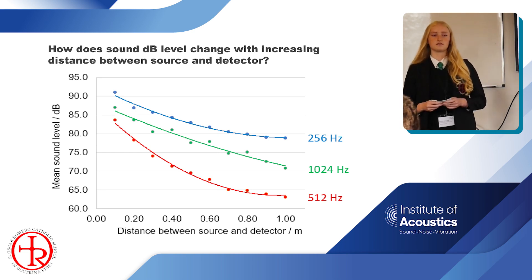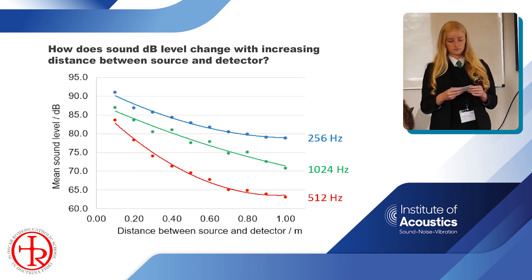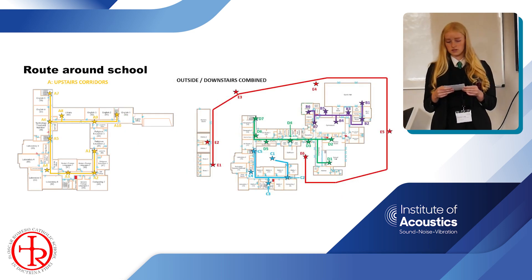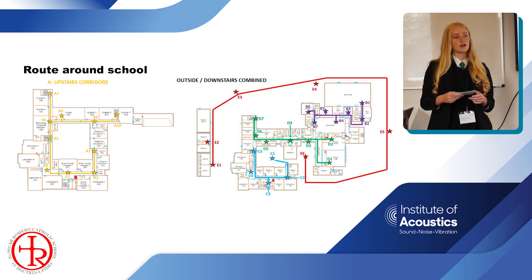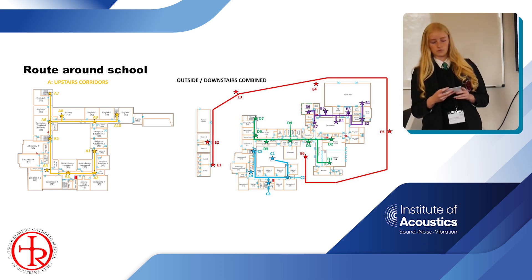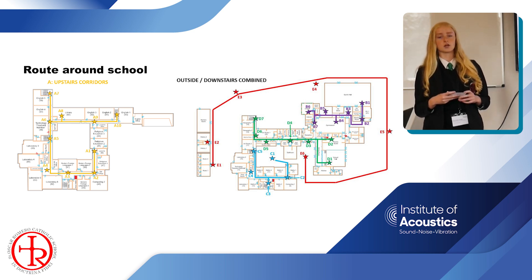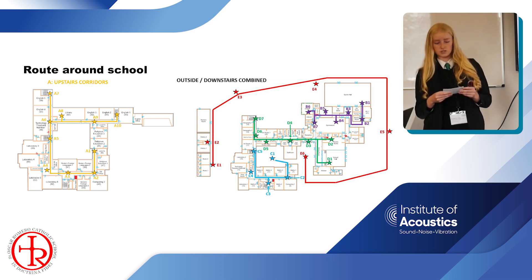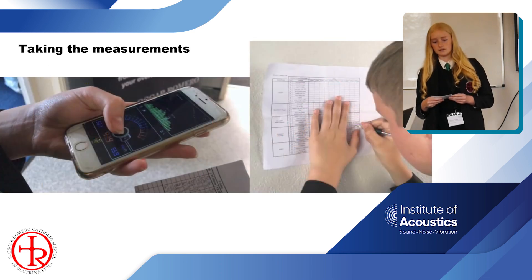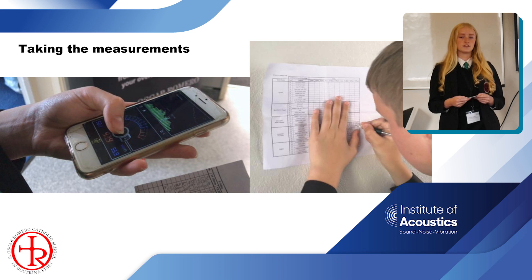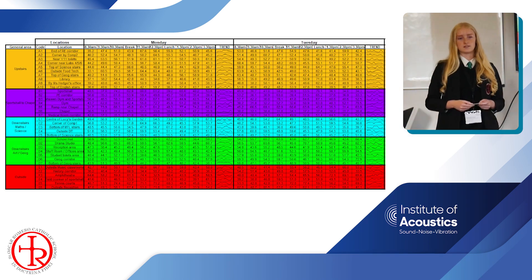The greatest decrease was at 512 Hz. We then decided it would be interesting to take sound level measurements around the school buildings and see how these change during a typical day. We chose 35 locations around the school, and at each location, the mean sound level over a 10-second time period was taken. Measurements were taken at 10 different times across each school day during a five-day school week, giving us 1,750 measurements — but what to do with all this data?